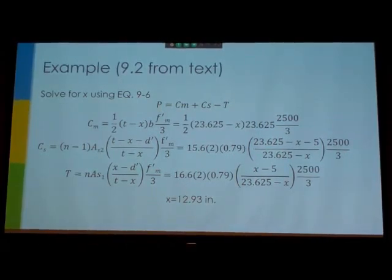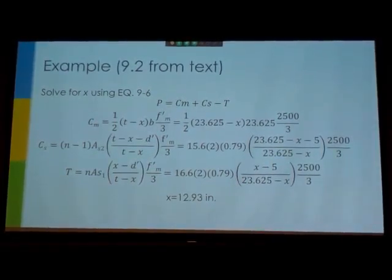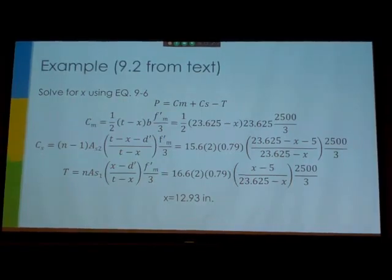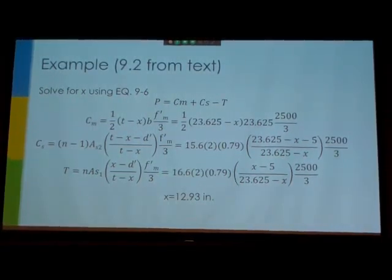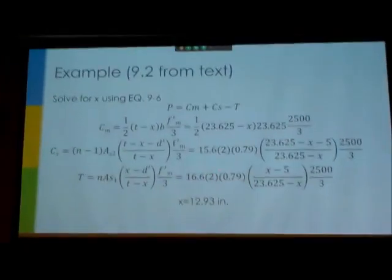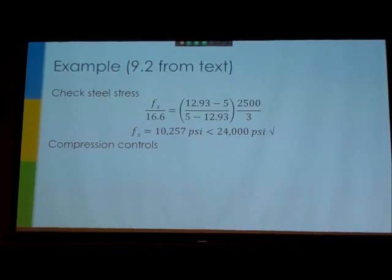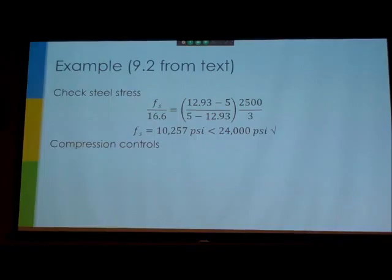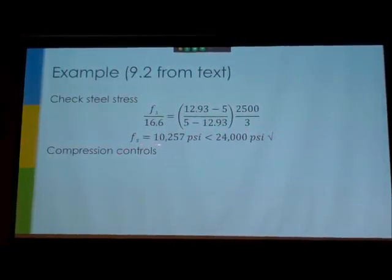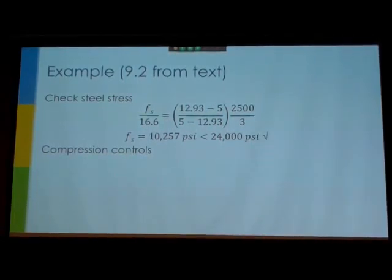And then we have to find x to find what our moment would be on that. So this horrible derivation, you can check these numbers if you want, but basically all this slide does is just solves for x. It's a quadratic. And then from there we're checking the steel stress to see if we're really in category 2 or 3. And we see from this that we haven't reached our max stress, so it is compression control. Our masonry has added to max stress.